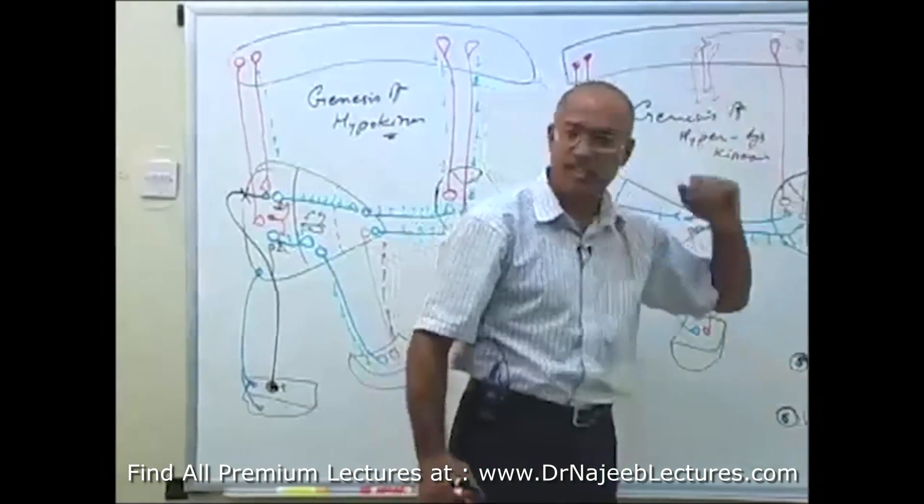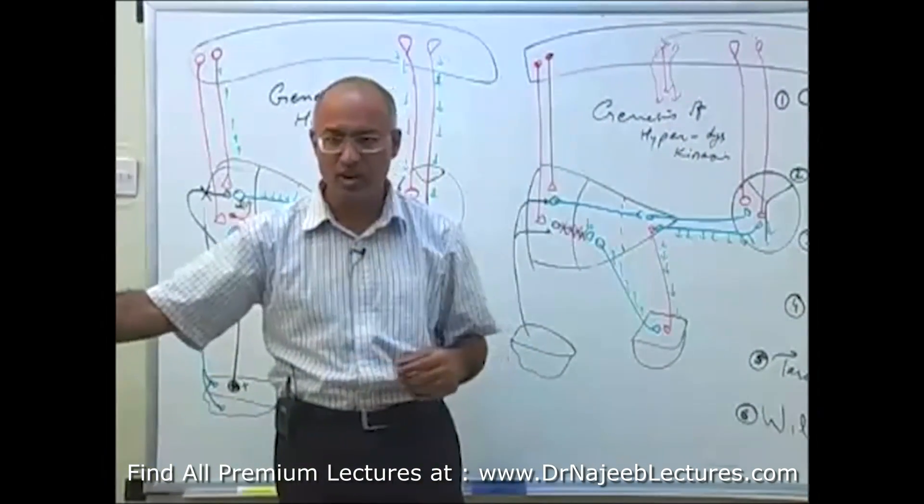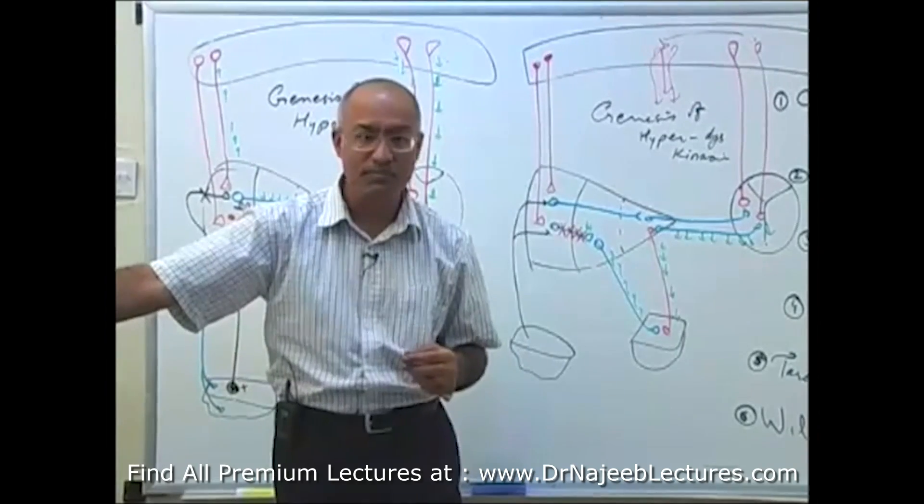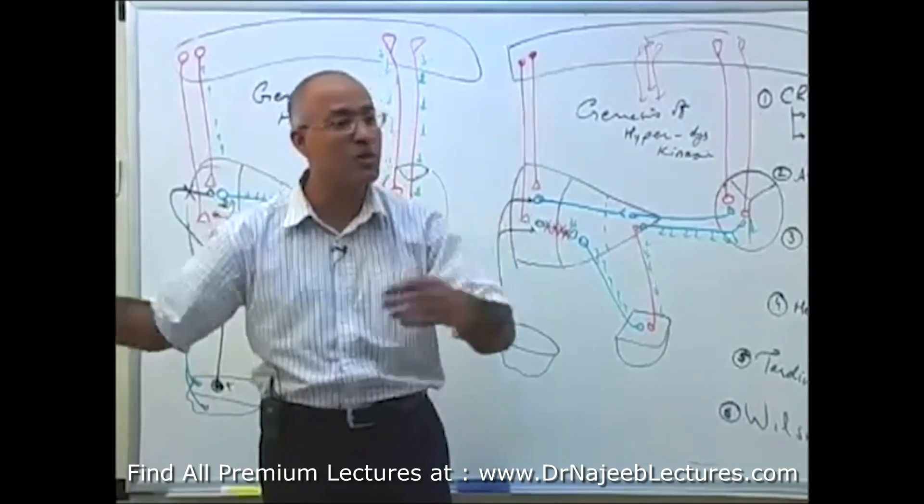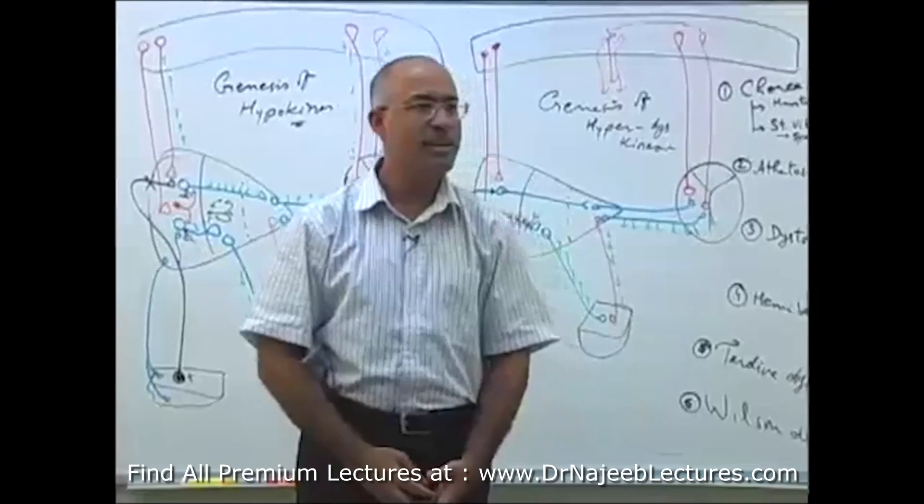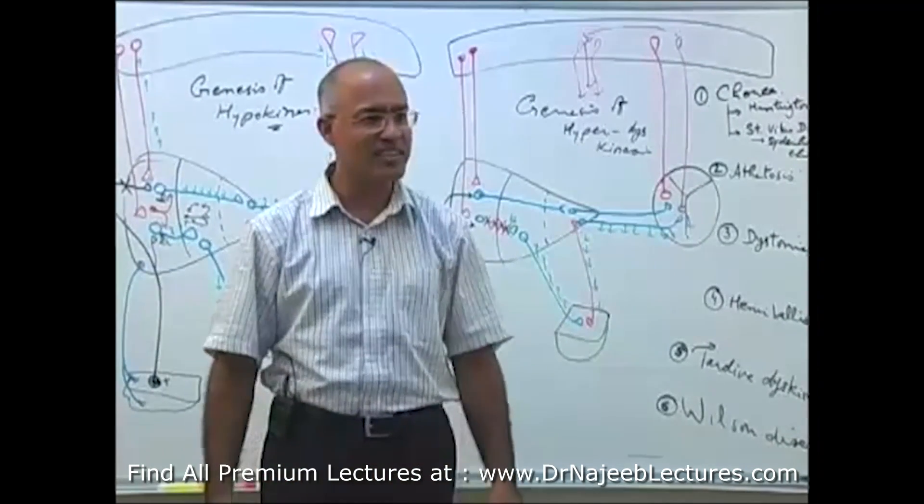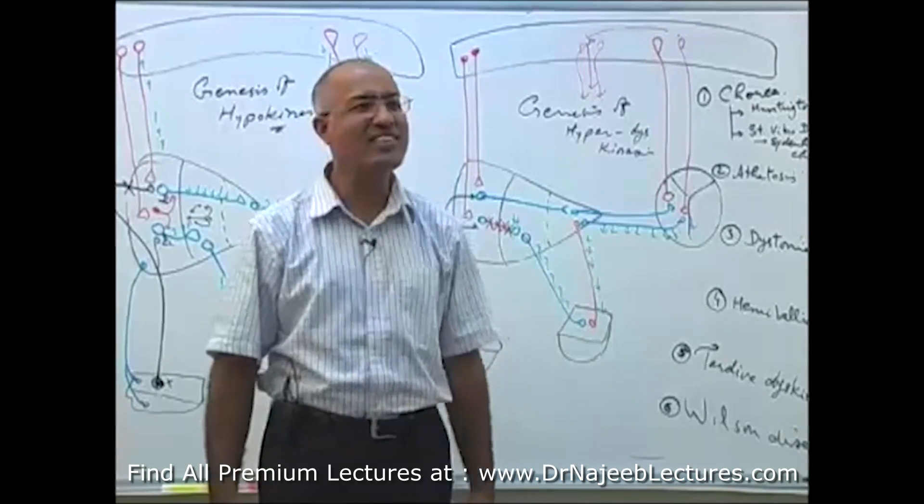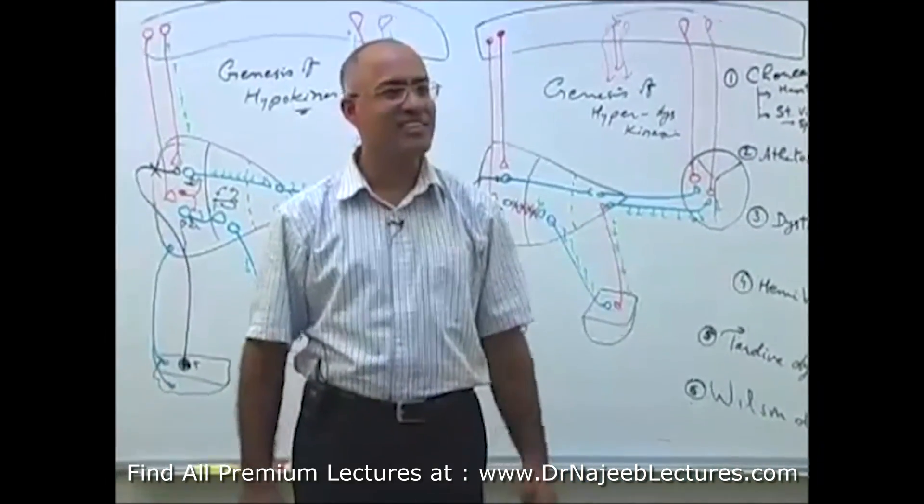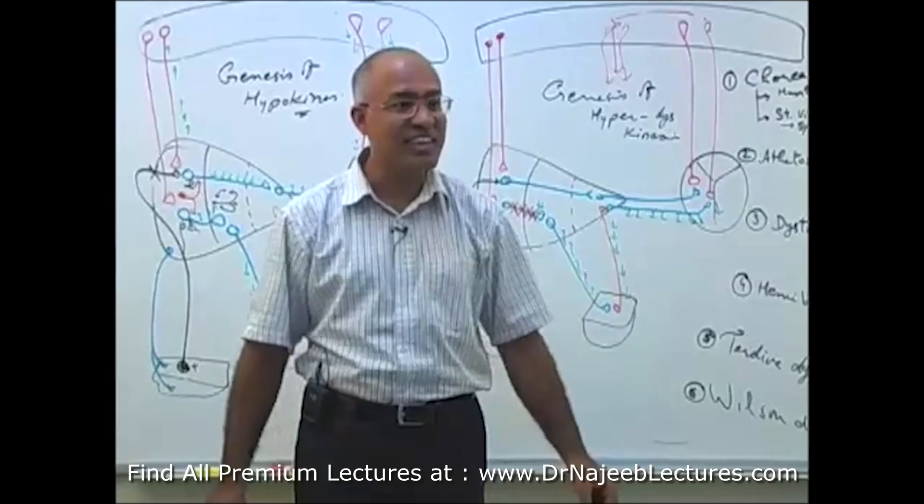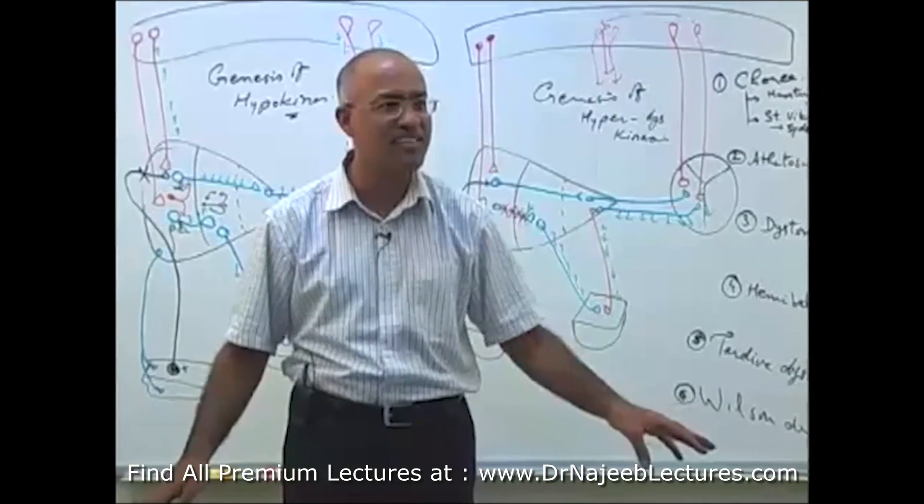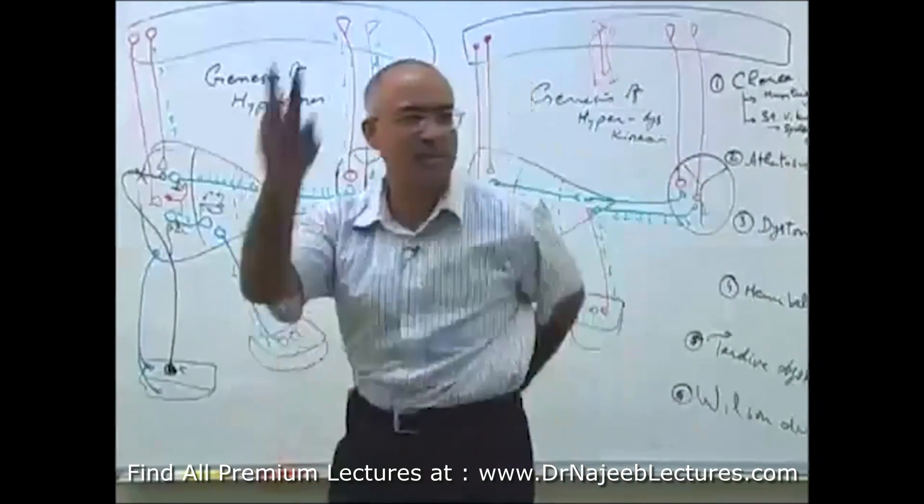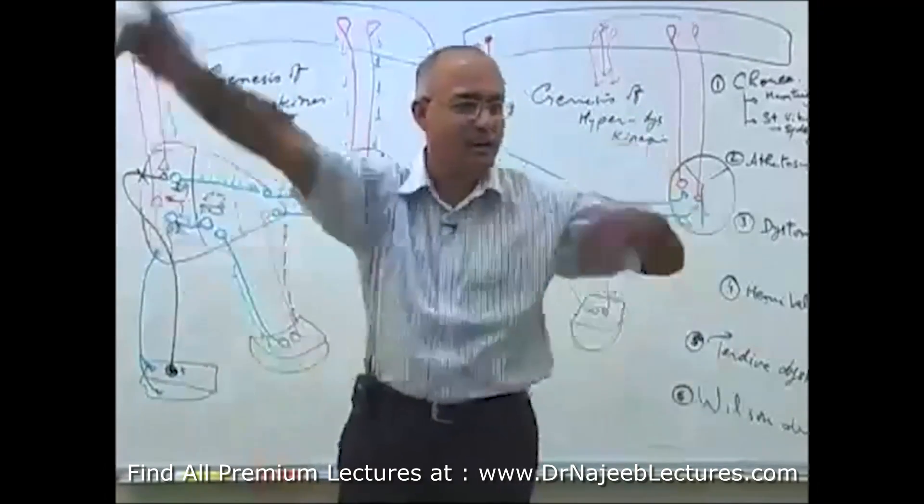Now first of all, chorea. What is chorea? Have you seen Michael Jackson dance? Michael Jackson dance is somewhat like chorea: sudden, brisk, purposeless, flying movements of the limbs. Uncontrollable.